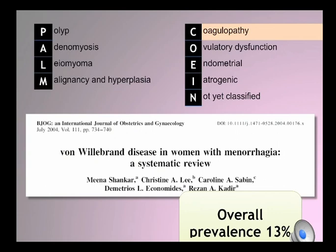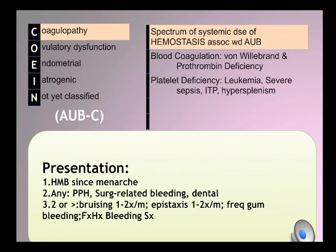Coagulopathy encompasses the spectrum of systemic disorders of hemostasis that may result in AUB. Disorders of blood coagulation, like von Willebrand disease and prothrombin deficiency, have an overall prevalence of 13 percent. Disorders that produce platelet deficiencies include leukemia, severe sepsis, idiopathic thrombocytopenic purpura, and hypersplenism. Women on chronic anticoagulation are also included under this classification, as it is more appropriate to classify them as having a coagulopathy.